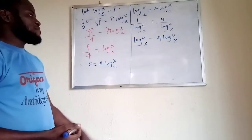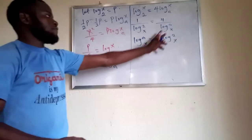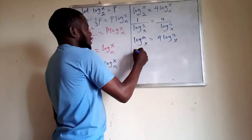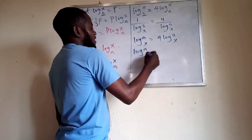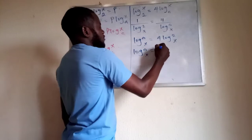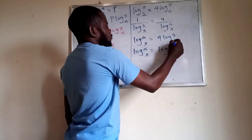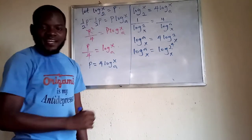Now, taking the 4 back as a power, the right side becomes log of 2 to the power of 4 in base x. Since the bases are the same on both sides, we can equate the arguments.